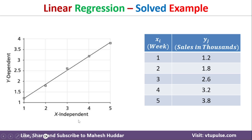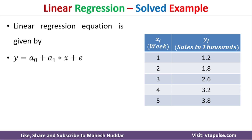In the linear regression algorithm, first we plot the independent variable against the dependent variable. In this example, x is the independent variable and y is the dependent variable. All five points are plotted. The goal of linear regression is to find a straight line that fits this dataset perfectly. The equation for this line is: y = a0 + a1*x + e, where e is the error.